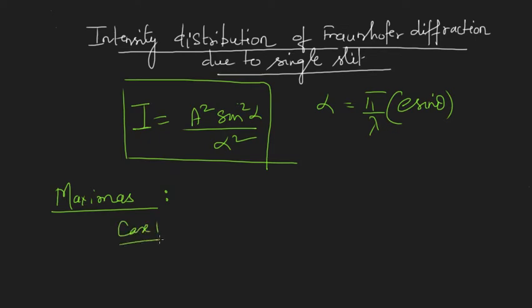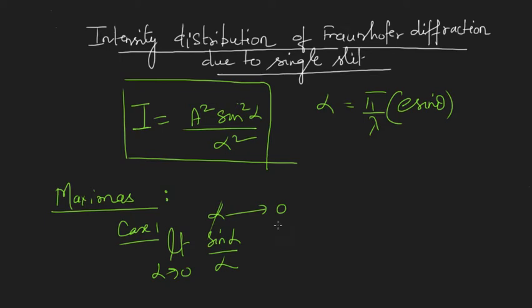Taking the first case as α→0, from the intensity expression I get a 0/0 form. Using L'Hôpital's rule, the limit of sinα/α as α→0 gives 1. In such a case, when sinα/α equals 1, I get my intensity as the maximum intensity, which is a².